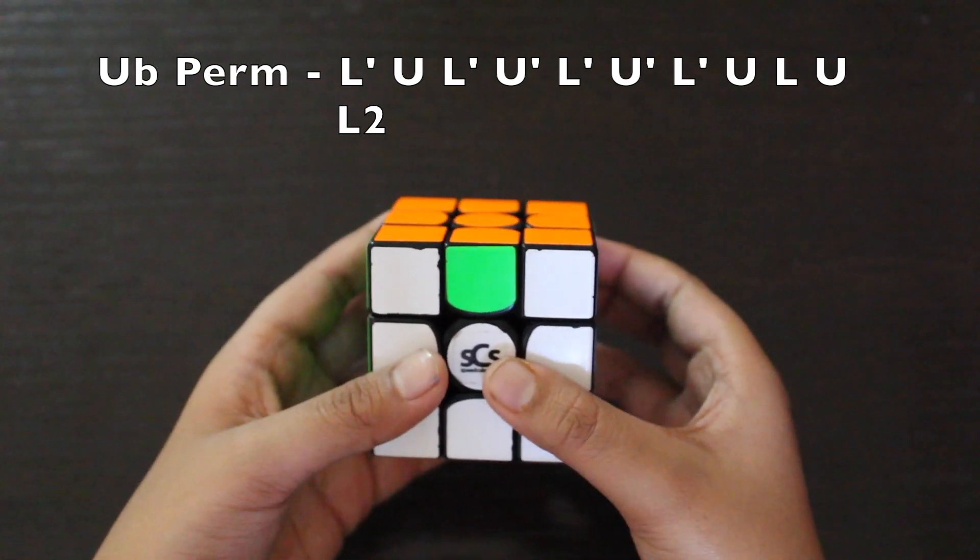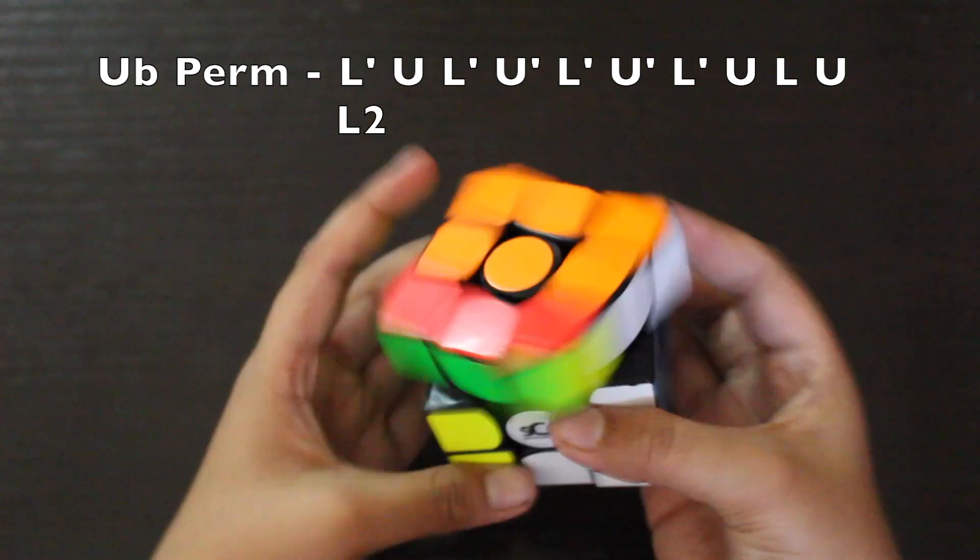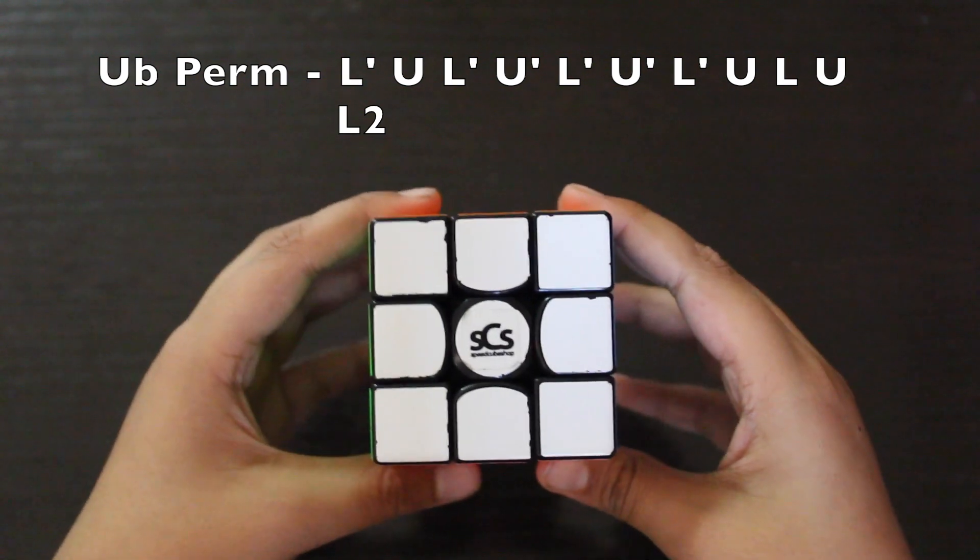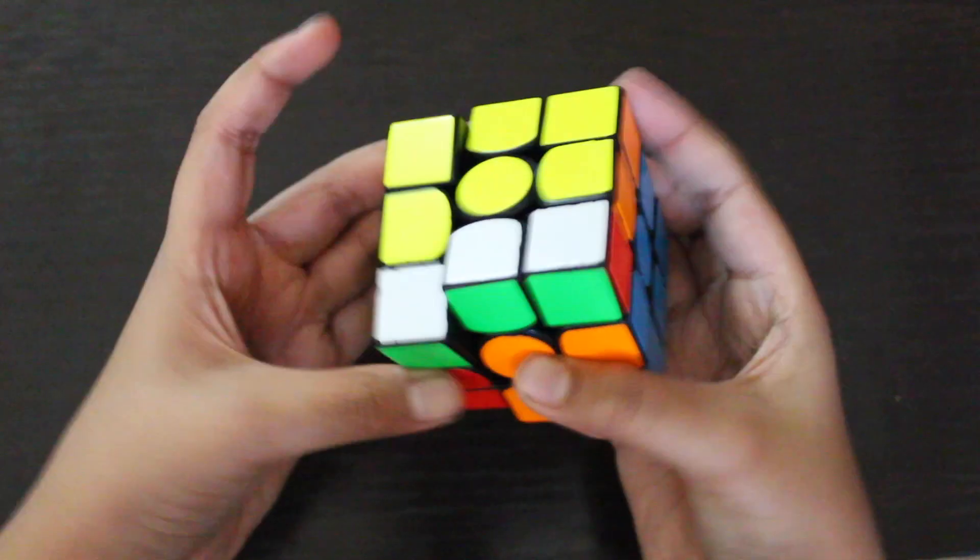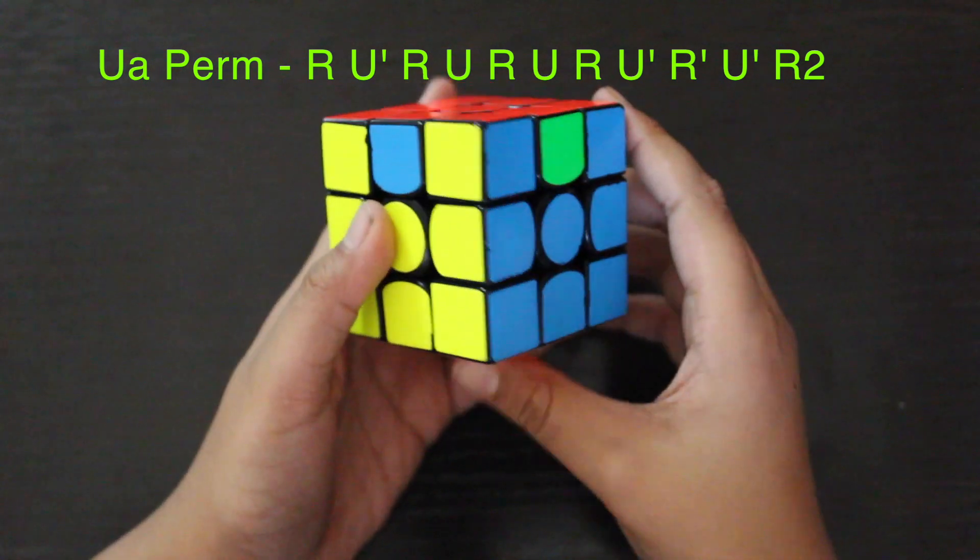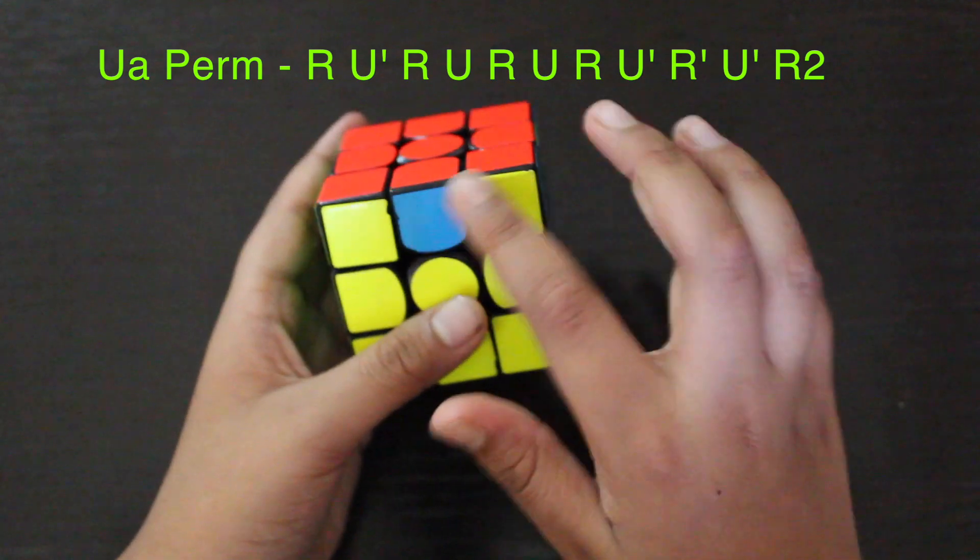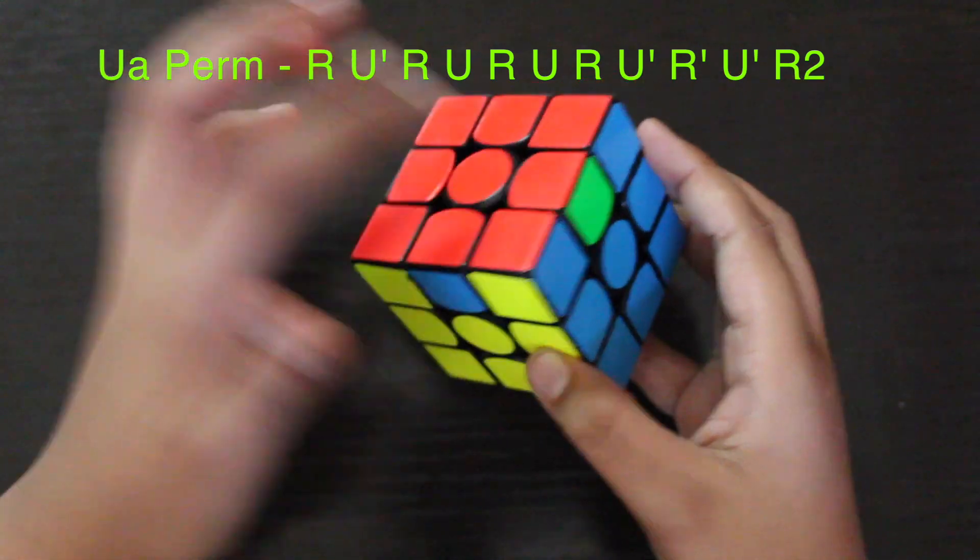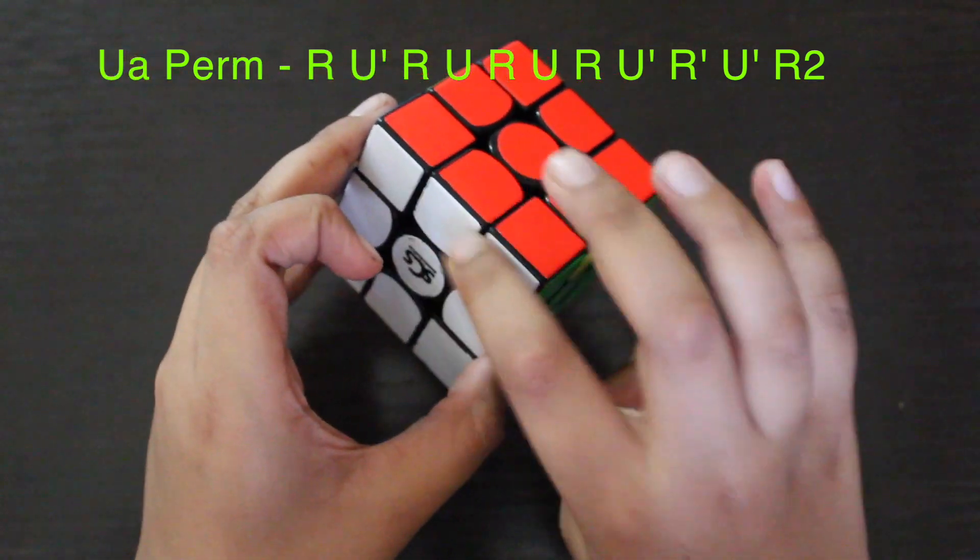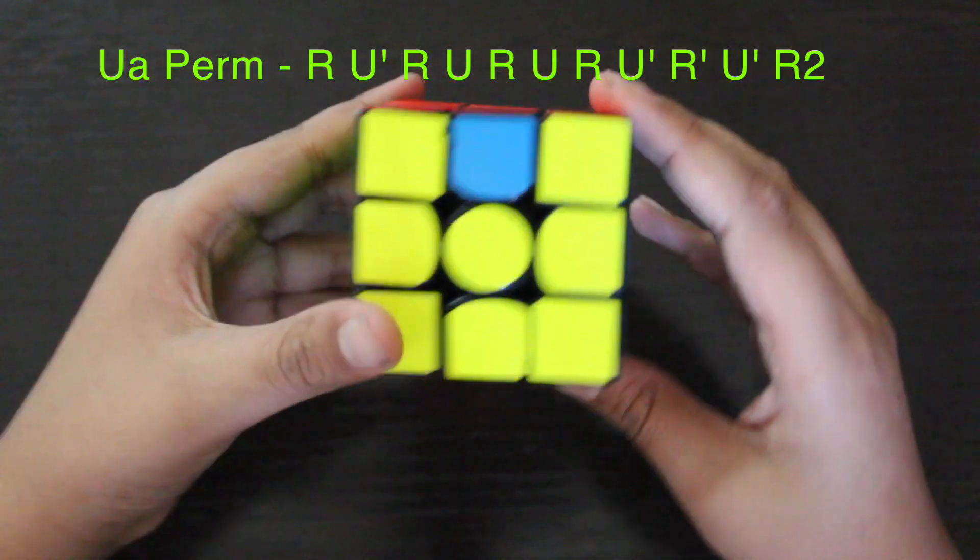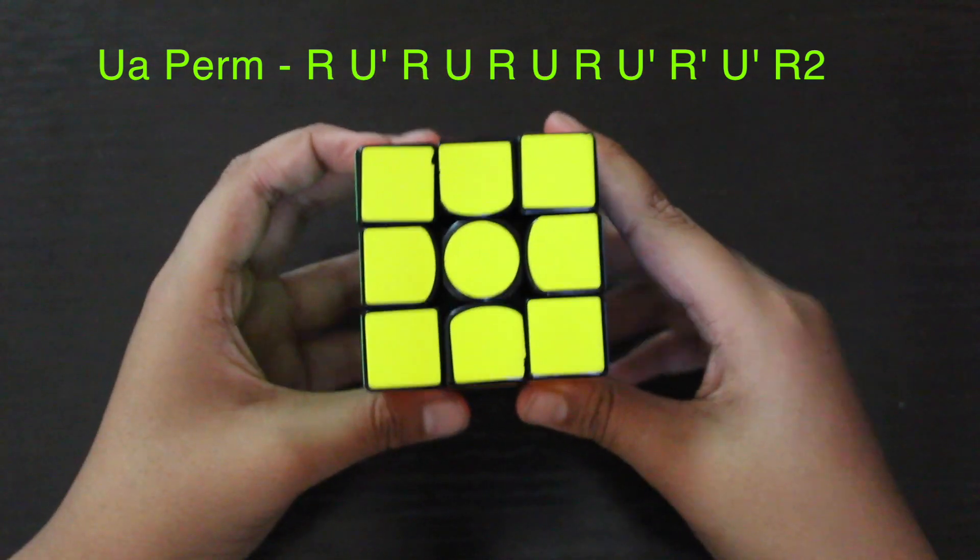The next algorithm in the list of EPLs is the UA perm. In the UA perm, this edge moves to the right and this up here, so there's the circulation of edges like this, and at the back there is a solved side. We drill the algorithm this way. This algorithm is also a fun one to solve. Now in slow motion.